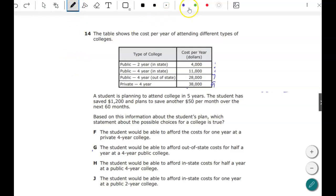Alright, let's go ahead and get started with this one. So this is number 14. The table shows the cost per year of attending different types of colleges. A student is planning to attend college in five years. The student has saved $1,200, plans to save another $50 for the next six months.